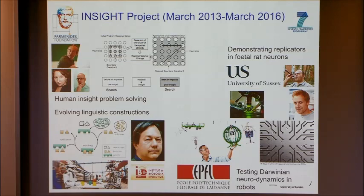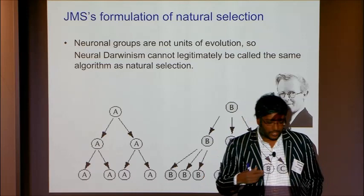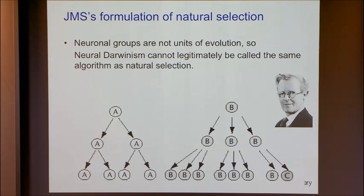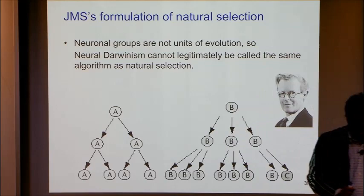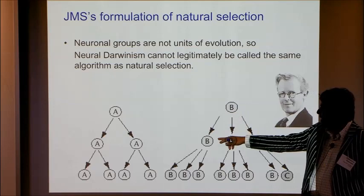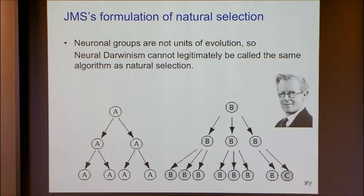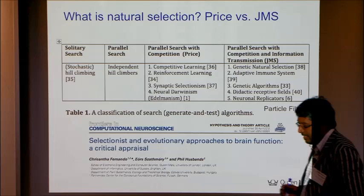John Maynard Smith defines natural selection as an algorithm — I think it's actually a class of algorithms — that takes place when you have units of evolution, things which multiply; variation, meaning A is different from B; and heredity, so the offspring of A resemble A more than they resemble B. This is a class of algorithms in the sense that it can be implemented in many substrates, just as it's implemented in the immune system to some extent.